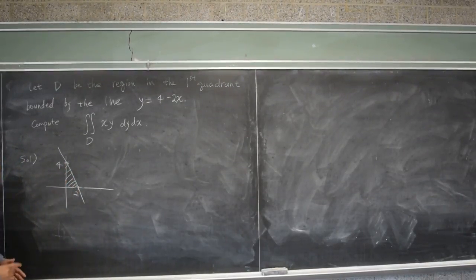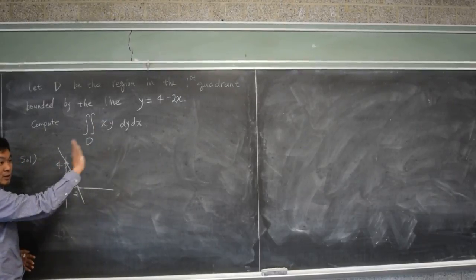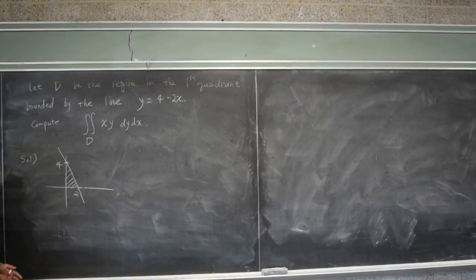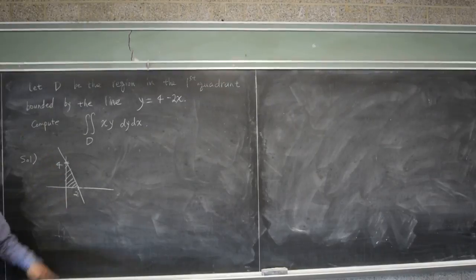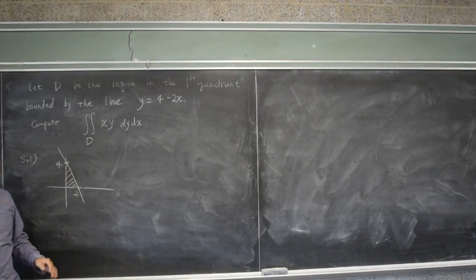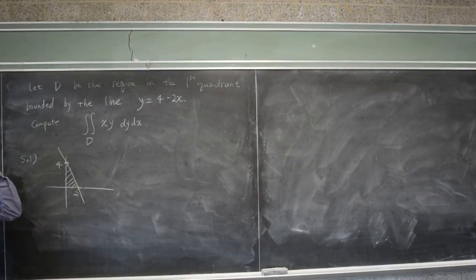And over this region, you have some function. The graph of a two variable function is a surface in three-dimensional space. So you have something, and we're trying to find the volume under that surface. And we don't even care what that looks like at this point. We just want to calculate the value. So let's try this.